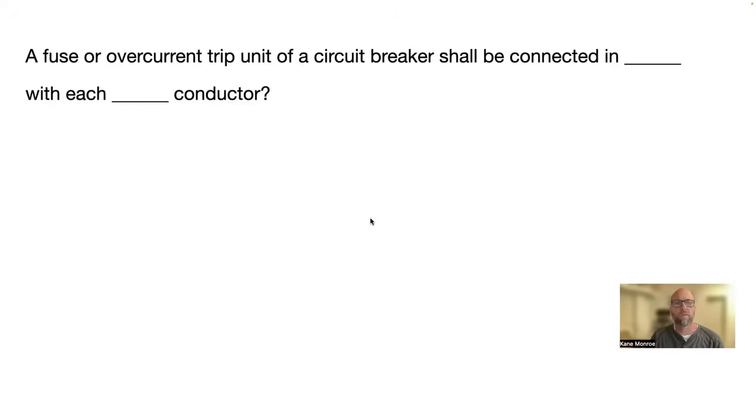A fuse or overcurrent trip unit of a circuit breaker shall be connected in blank with each blank conductor. Guys, this is a common question, a very common question here. So it should be connected in series and it should be connected to the ungrounded conductor. So series and ungrounded. Because if it was parallel, then remember, your voltage could go around. Series, it has to stop right there.